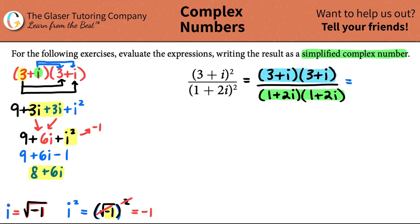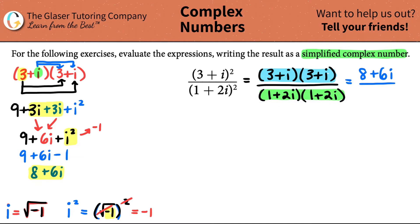Can't simplify that anymore - I have a real component, the 8, and the non-real or imaginary component. So that's what the numerator equals: 8 plus 6i. Now I need to do the same thing and clean up the denominator, so I'll do that over here. I have 1 plus 2i times 1 plus 2i.